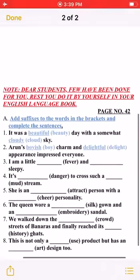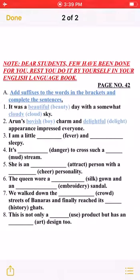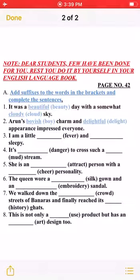The next homework is from page number 42, Exercise A: add suffixes to the words in the brackets and complete the sentences. Numbers one and two are done as examples. Number one: 'It was a beautiful (beauty) day with a somewhat cloudy (cloud) sky.' Number two: 'Arun's boyish (boy) charm and delightful (delight) appearance impressed everyone.' For 'delight,' we add '-ful' to get 'delightful'; for 'boy,' we add '-ish' to get 'boyish.' Numbers three to eight you need to do by yourself — it's very easy! Good luck, students. Thank you.